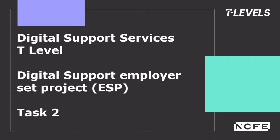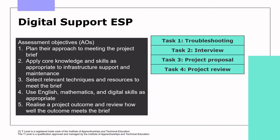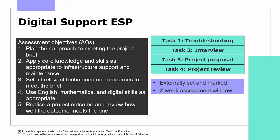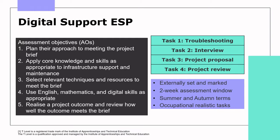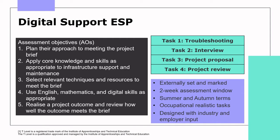Welcome to this bite-sized video for the Digital Support Services T-Level, where we'll explore task 2 for the Digital Support Employer Set Project. The Employer Set Project consists of a series of tasks designed to assess the five assessment objectives shown. This skills assessment is set and marked by NCFE, where students will need to apply the core knowledge and demonstrate the core skills from the specification. The ESP is conducted during a two-week assessment window, available during the summer and autumn terms. The tasks are designed to replicate real-life industry experience, using employer and industry experts when developing the ESP.